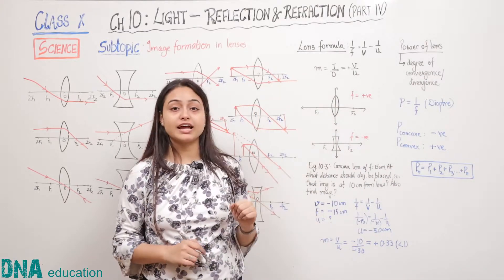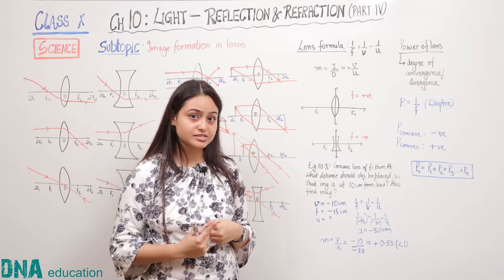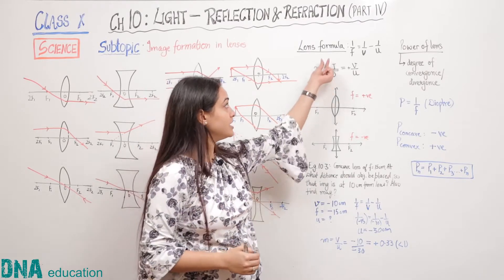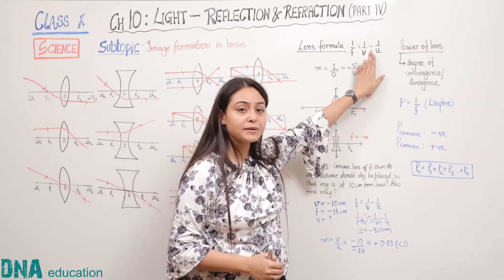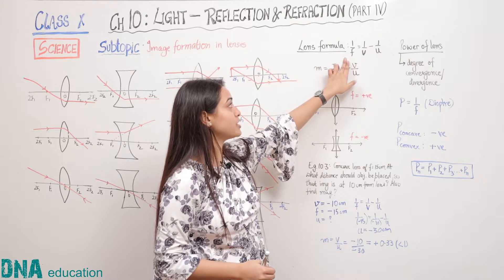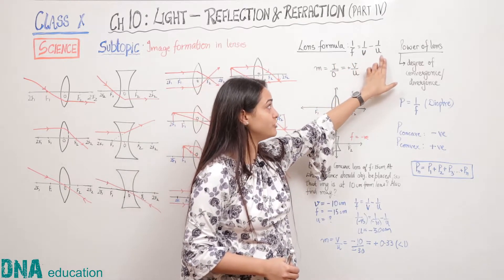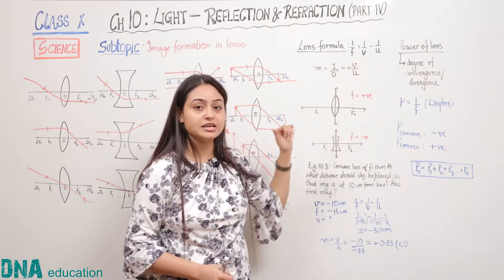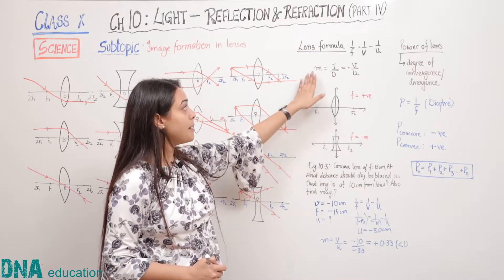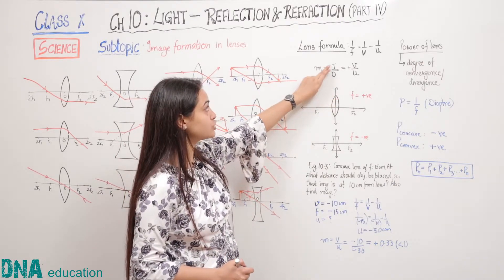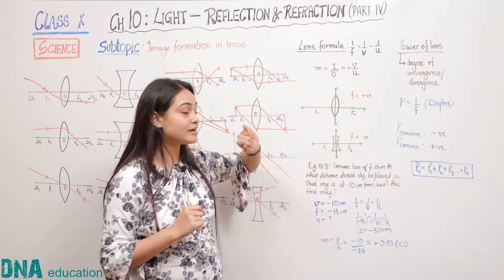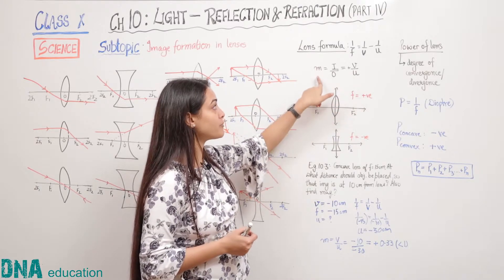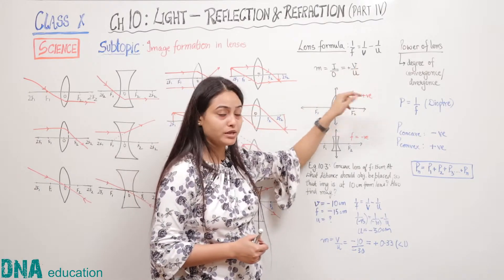As we discussed, the mirror formula is 1/f = 1/v + 1/u. The lens formula simply replaces the plus sign with a minus sign, and the formula becomes 1/f = 1/v − 1/u, where f is the focal length of the lens, v is the image distance and u is the object distance. For magnification, it is height of image upon height of object. In case of mirrors the formula is −v/u, but in case of lenses the formula for magnification becomes +v/u.